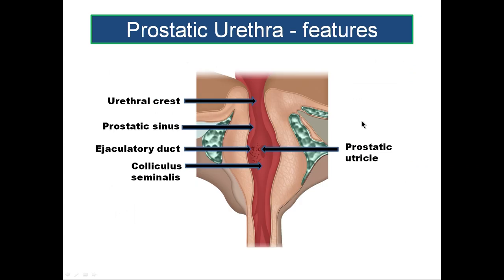Let us look at the features in the prostatic urethra. The prostatic urethra is a tubular structure with a lumen. The posterior wall of the lumen shows an elevation called the urethral crest, present throughout the prostatic urethra. On transverse section, the prostatic urethra appears semilunar in shape with a slight projection from the posterior wall, formed by the urethral crest.